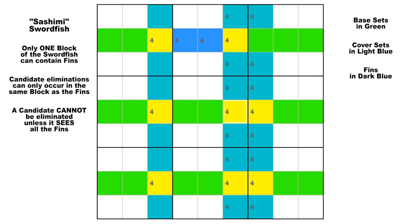Here we have a finned swordfish on candidate 4 with the base sets in rows 2, 5, and 8 and the cover sets in columns 3, 6, and 7. There are two fins in block 2 in those two dark blue cells — row 2, column 4 and row 2, column 5. If you recall from video number 11, it is possible to apply this finned technique even if one of the base candidates is missing with the digit already placed in that cell, or if there are other candidates in that cell other than the fish digit. This is known as a sashimi swordfish.